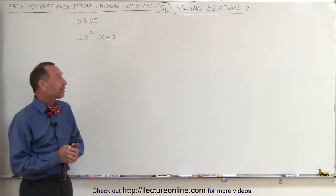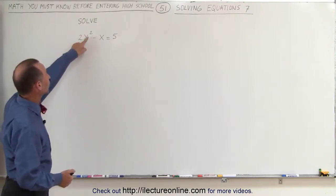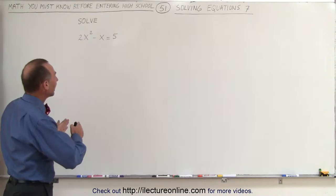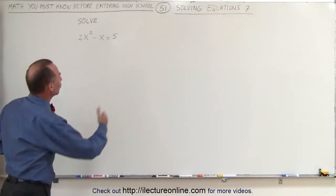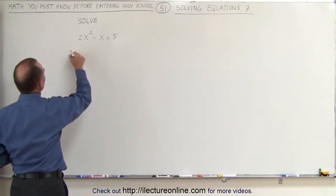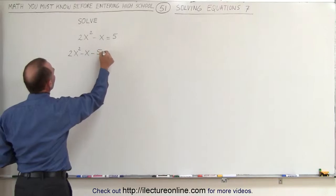Welcome to our lecture online. Here's our next example of how to solve an equation. Again, notice that this is a quadratic equation, which means we want to move all the terms over to one side and set it equal to 0. We're going to move the 5 to the other side of the equation and write it as follows: 2x squared minus x minus 5 equals 0.